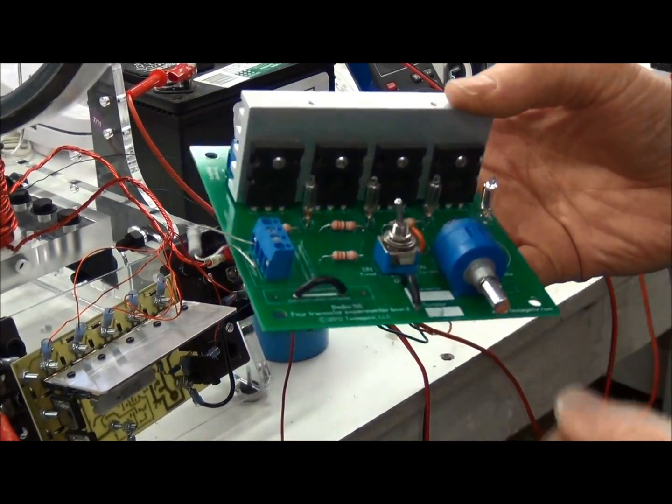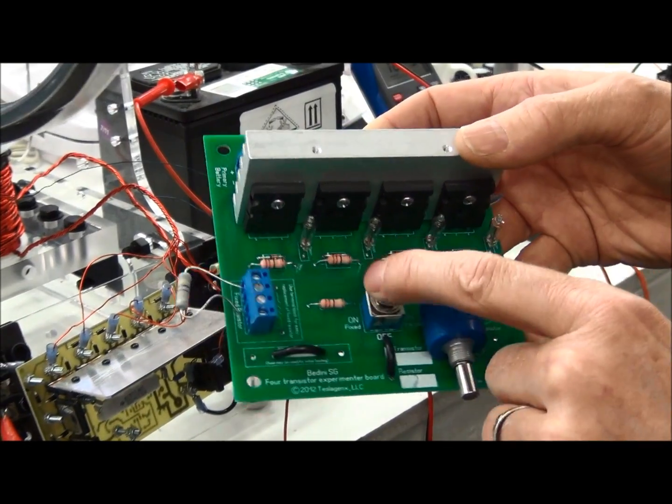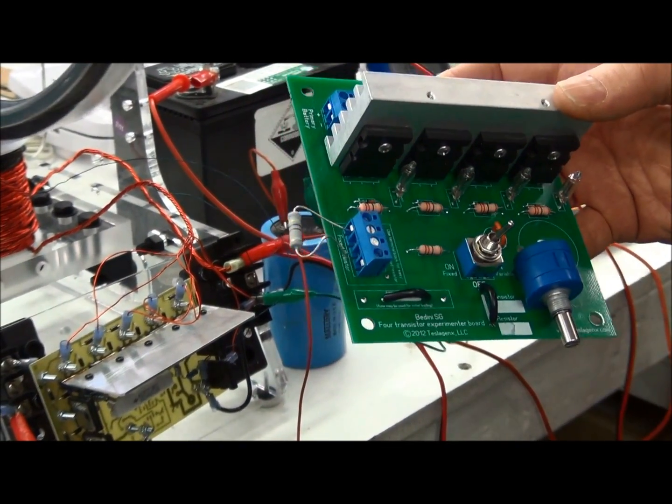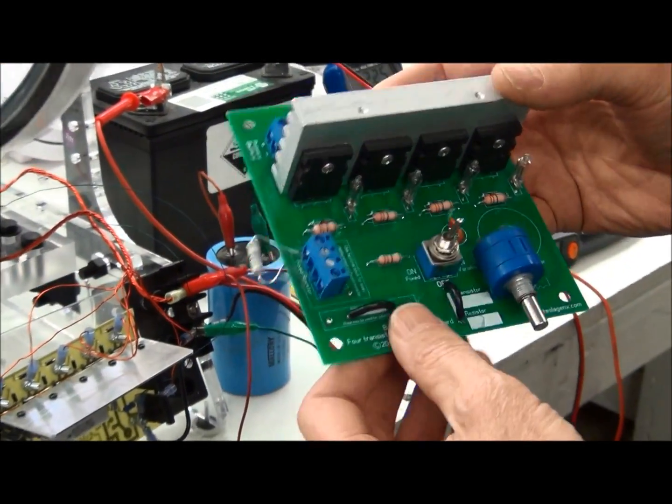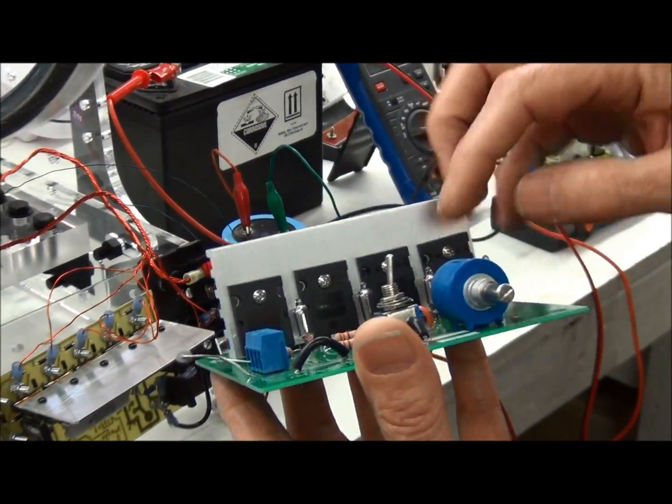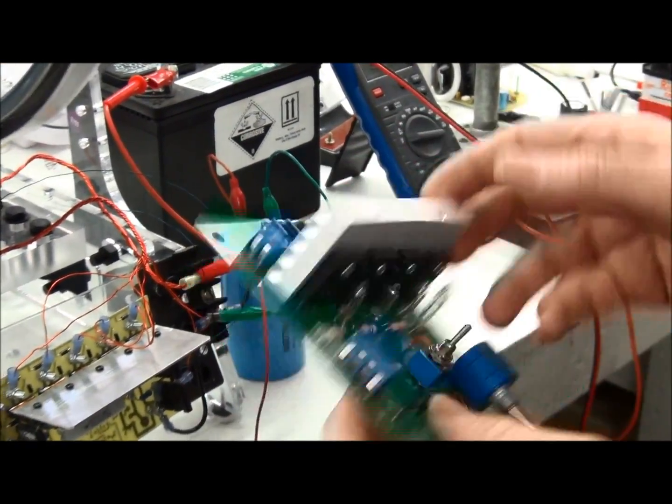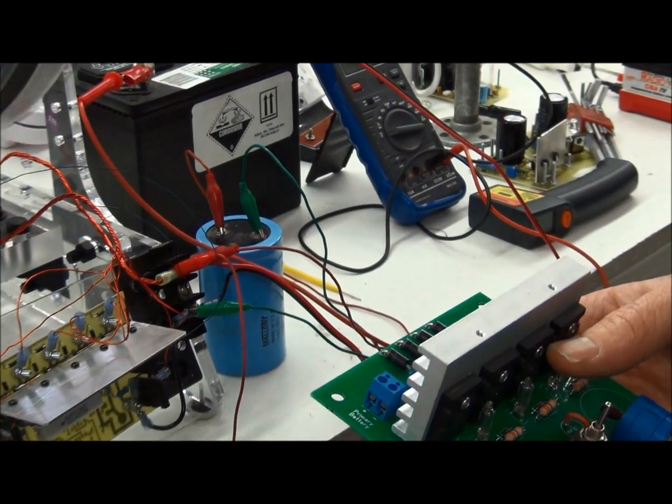It's got a potentiometer there so you can tune it, and after you've tuned it, you can flick it over to a fixed resistor, which is this guy here. Optional, you can have a fuse in there. It's got the neon bulbs. It's got everything you're going to need to get this running.